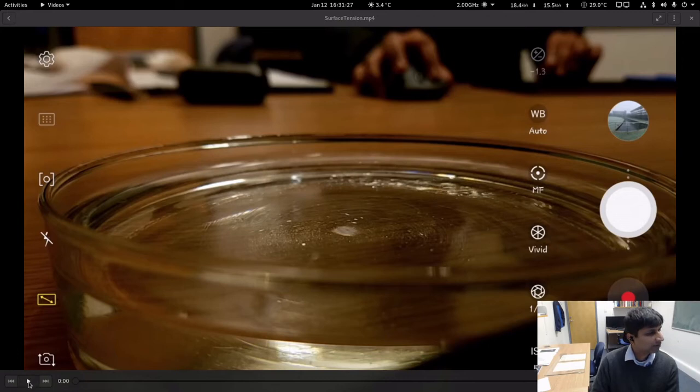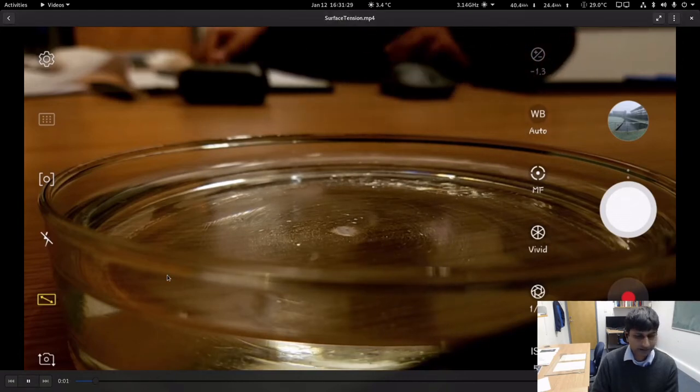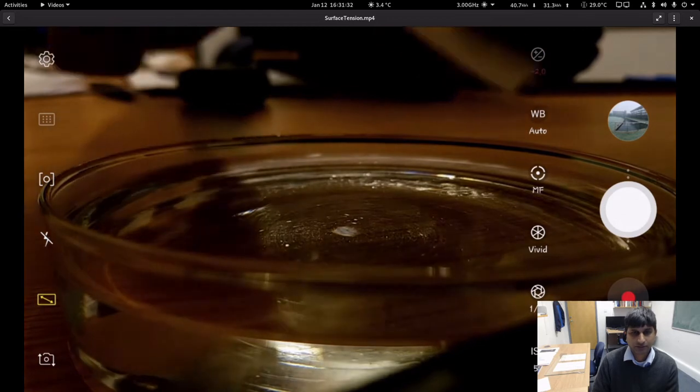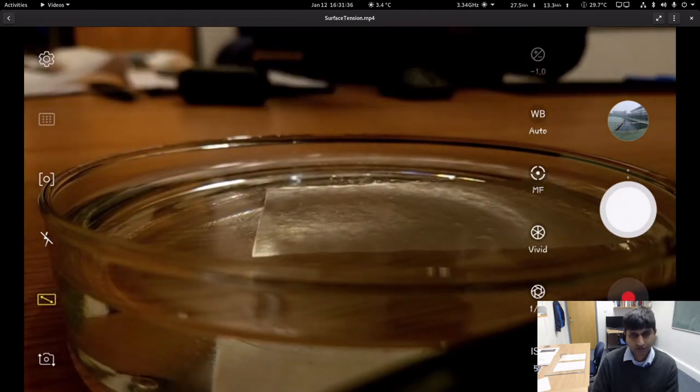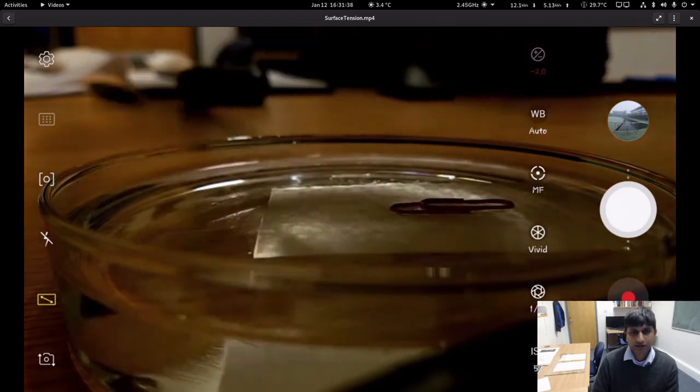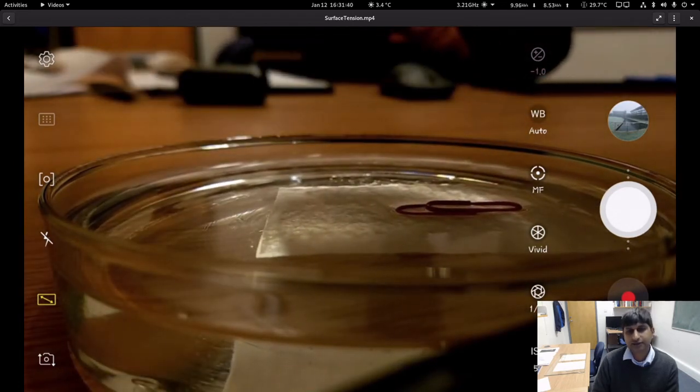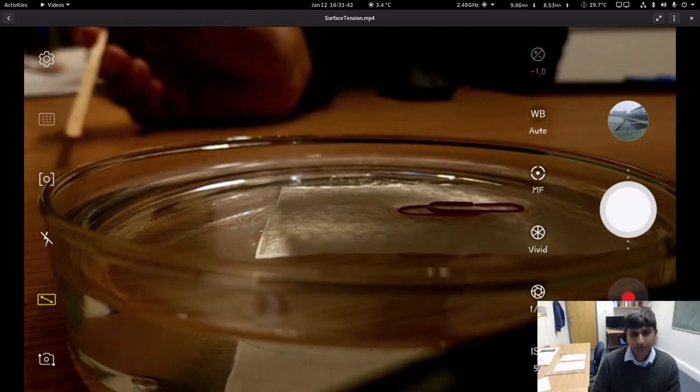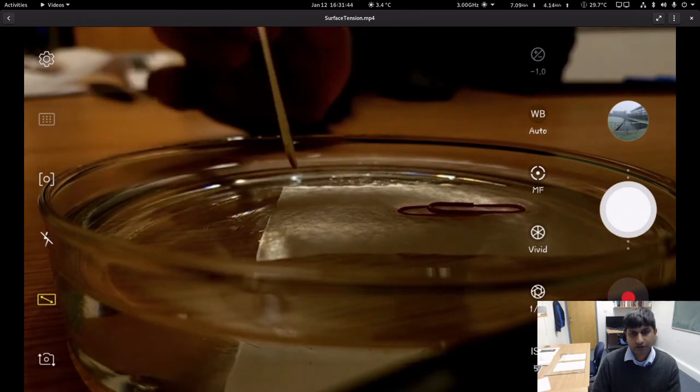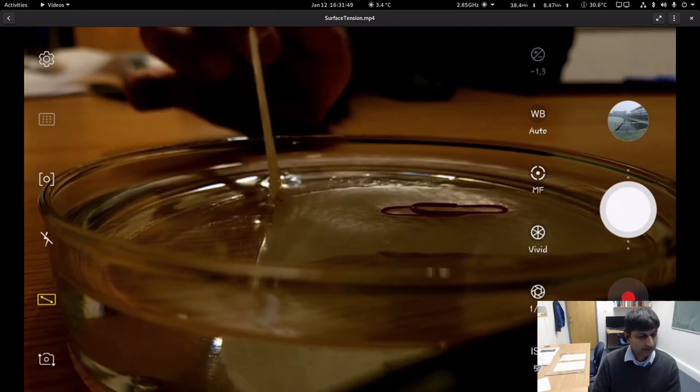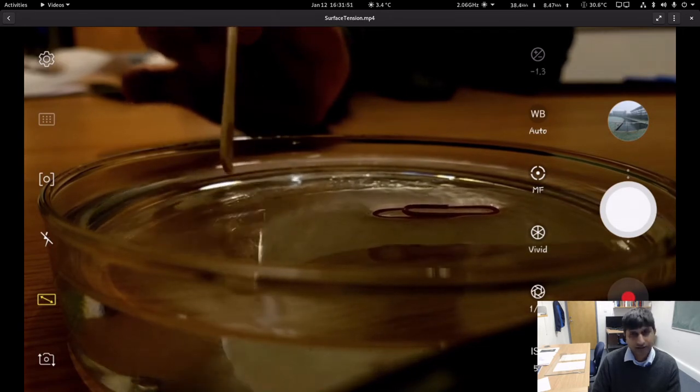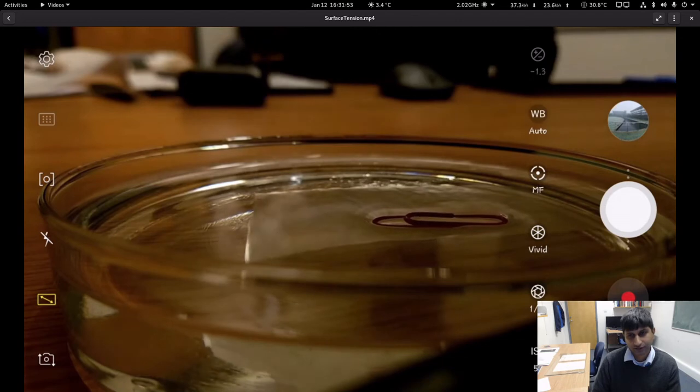In this demo, I have some water in a petri dish and I start with a small tissue paper floating on the surface of water. I use that to gently release a paper clip on the surface of water. I will sink the tissue paper and you will note that the paper clip continues to float on the surface of water.